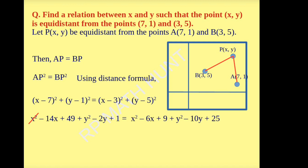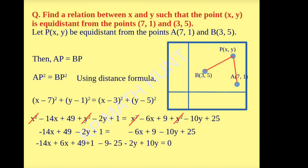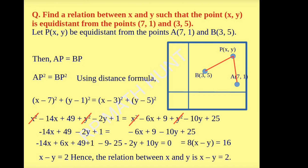Now x² and y² cancel on both sides. The remaining terms: −14x + 49 − 2y + 1 = −6x + 9 − 10y + 25. Rearranging and transposing terms: −14x + 6x + 49 + 1 − 25 − 2y + 10y = 0. After simplification: −8x + 8y = −16, which gives x − y = 2. Hence, the relation between x and y is x − y = 2.